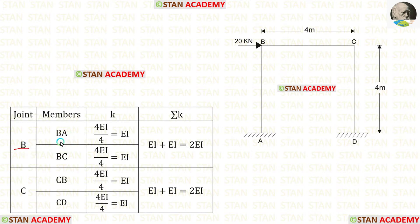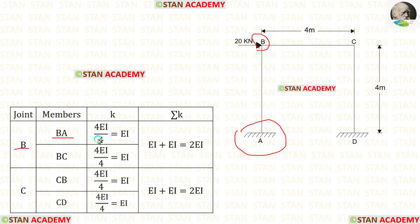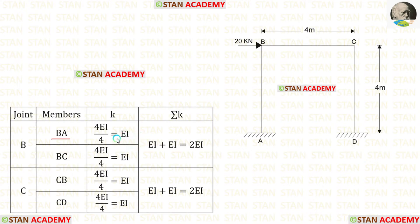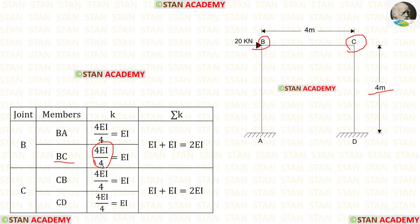At joint B, let us find the stiffness for BA. From point B, we look at point A — there is a fixed support. Using the formula 4EI upon L, with length of BA equal to 4, we get stiffness of BA equal to EI. Now for BC: from point B, we look at point C — point C is continuous. Using 4EI upon L with length 4, we get stiffness of BC equal to EI.